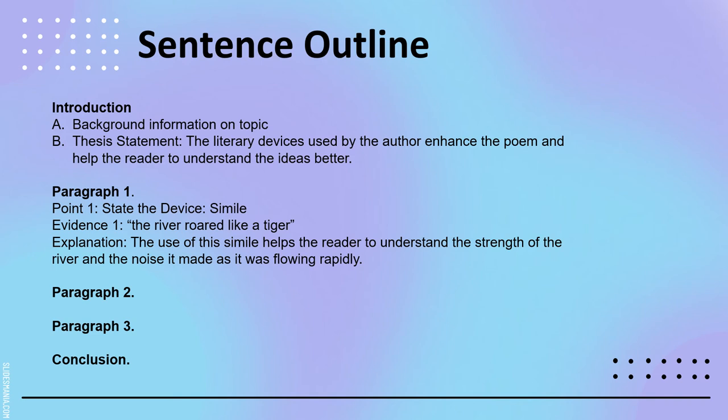For example, if we're speaking about literary devices in a poem, paragraph one is going to have point number one: state the device, which is simile; give your evidence — 'the river roared like a tiger'; give the explanation — 'the use of this simile helped the reader to understand the strength of the river and the noise it made while it was flowing rapidly.' Remembering what we discussed in PEE earlier, you would then move on to paragraph two, paragraph three, and so on for every point you're making in your essay.